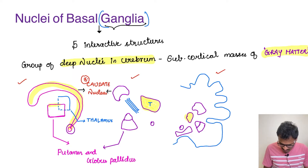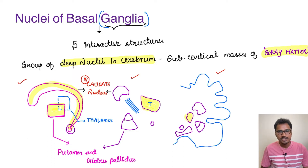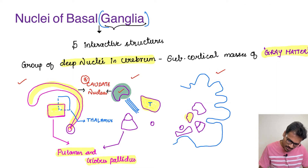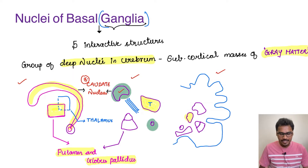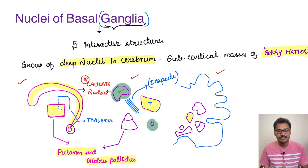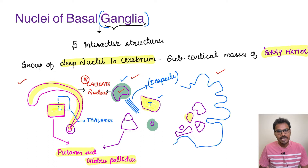The next two structures lie closely to each other and very next to the thalamus — they are the putamen and globus pallidus. In the horizontal view, we can see the caudate nucleus with one end here and the tail on the other end. Closer to the other side, one group of fibers passes through — this is called the internal capsule. The internal capsule divides the structures: the caudate is on one side, the thalamus on another, and the globus pallidus and putamen are on another region.